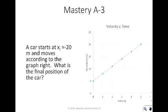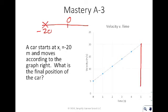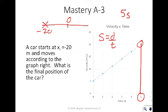The next example is more difficult. A car starts at x equals negative 20, and moves according to the graph. We want to find the final position of the car at five seconds. To figure out how far the car has moved, you might think to use speed equals distance over time, but that won't work here because the car is not moving at 20 meters per second for the entire five seconds.